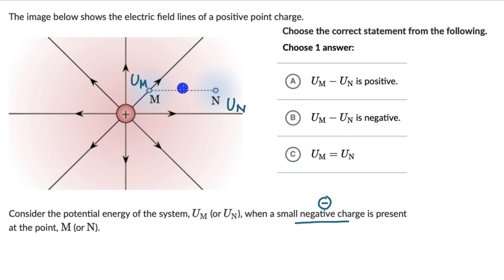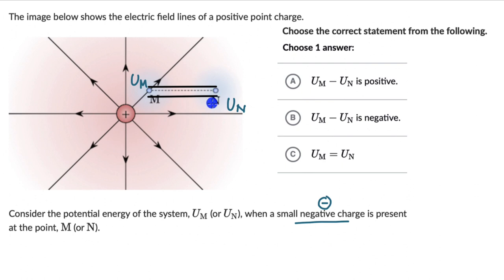If we have a negative charge kept at M or N, we ask: in which direction should it move so that the potential energy of the system decreases? Imagine a tunnel where the charge is restricted to move between these two points. If we leave the negative charge at point N, due to electrostatic attraction it moves towards point M. This movement from N to M reduces the overall potential energy of the system, so by that logic the potential energy at M must be less than the potential energy at N.